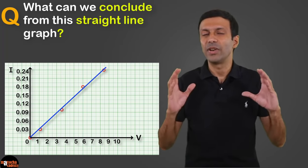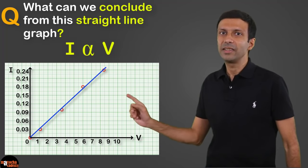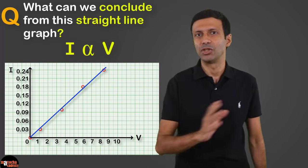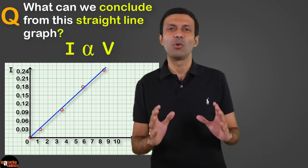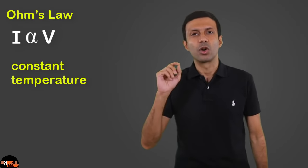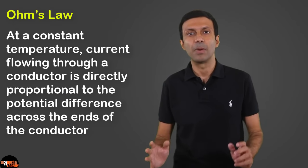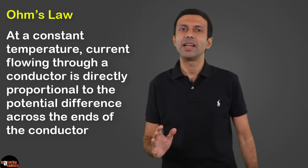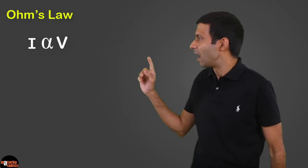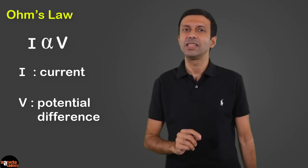Since the graph is approximately a straight line, the current is directly proportional to the potential difference. This is exactly what Ohm concluded from his experiment. He also added the condition that temperature should be constant. So Ohm's law states: at a constant temperature, the current flowing through a conductor is directly proportional to the potential difference applied across the ends of the conductor. Mathematically, I is directly proportional to V, where I is the current and V is the potential difference.